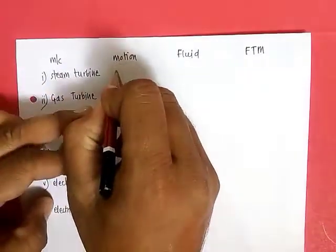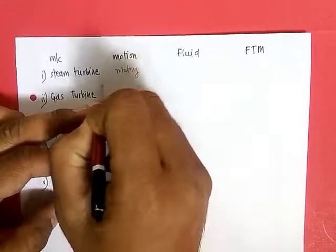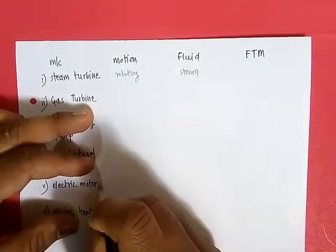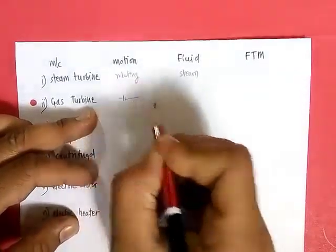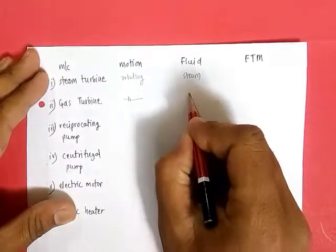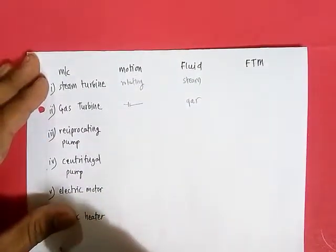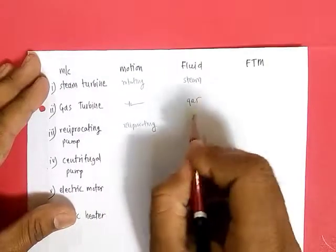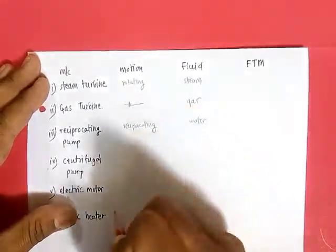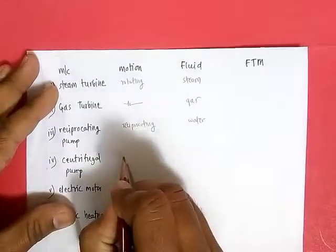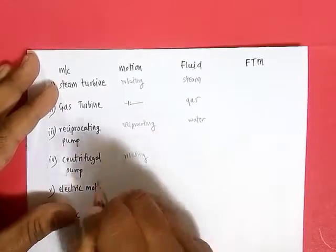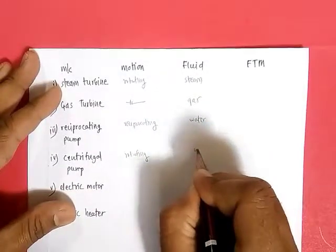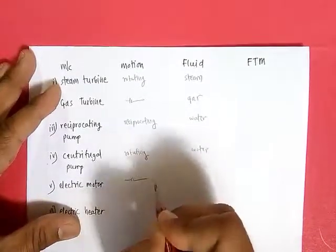Check for the first machine — steam turbine: motion is rotating and fluid is steam. Second, gas turbine: it is rotating and fluid flowing is gas. Next, the reciprocating pump: as the name indicates, the action is reciprocating, and the fluid is water. Then centrifugal pump: centrifugal means rotating, because due to the centrifugal effect there is rotation, so the motion is rotating and the fluid is water.